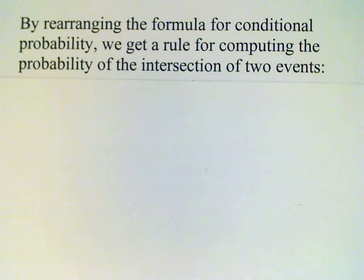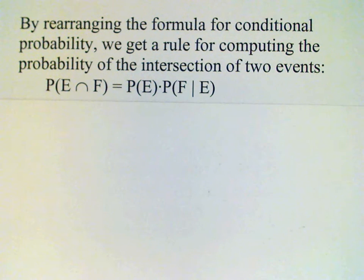It's easy to rearrange the formula for conditional probability, and we may be interested, for example, in the probability of the intersection of two events. So if we know the probability of E and the probability of F given E, then we can calculate the probability of the intersection just by multiplying those two probabilities together.